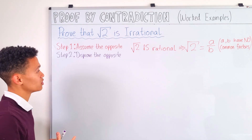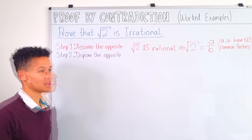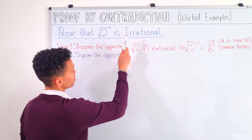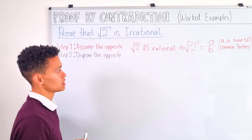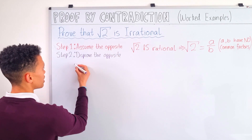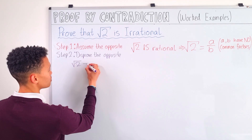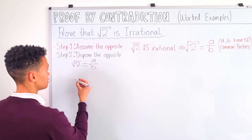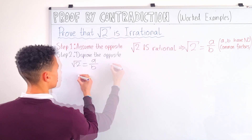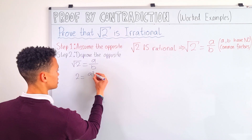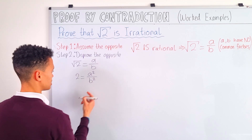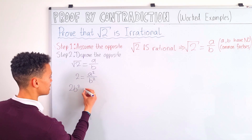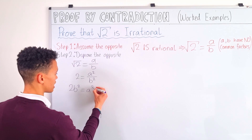In step two we want to disprove the opposite. So if we can disprove that root 2 is rational then it must be irrational. We start with root 2 equals a over b, then square both sides to get 2 equals a squared over b squared, and multiply both sides by b squared to get 2b squared equals a squared.